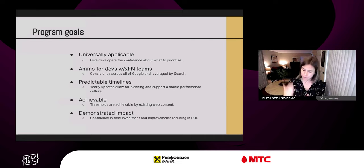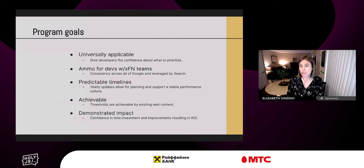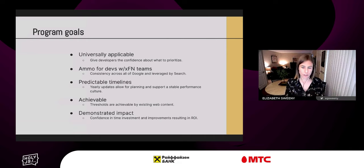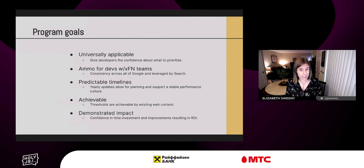Then there are predictable timelines — you know when changes are coming. Achievable is extremely important. The thresholds for Core Web Vitals need to be achievable by existing web content, not some mystical content we'll be able to create in 10 years. To confirm a threshold is achievable, we require that at least 10% of origins on the web currently meet the good threshold when we set it. We also verify that well-optimized content consistently meets the good threshold. And demonstrated impact — we want you to have confidence that you're investing in something that will show results.